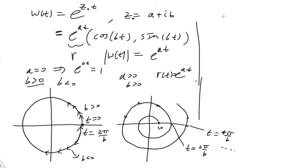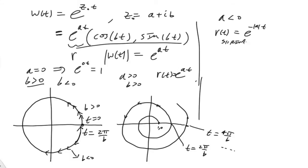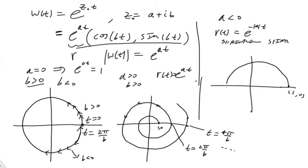Finally, one last case: a less than zero. Of course you get the opposite result — r(t), the modulus of this vector-valued function, equals e to the negative absolute value of a times t. So this would be a shrinking spiral. Starting at (1, 0) and spiraling inward. So all of these are just contours in the complex plane, but they're essentially complex-valued functions.